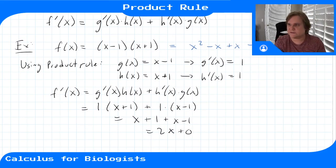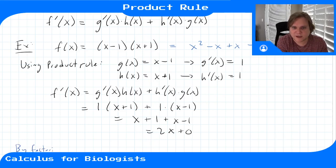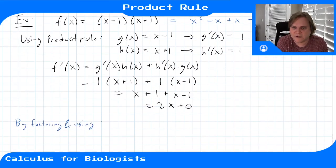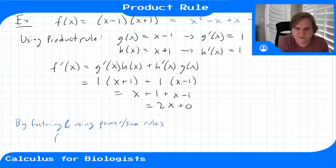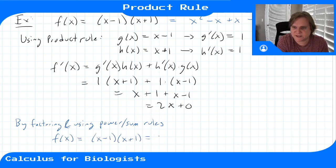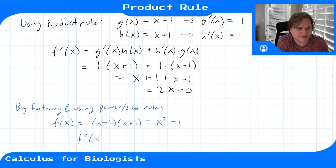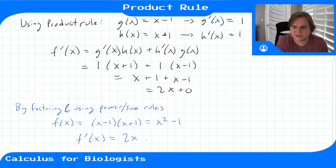If we did that by factoring and using the power and sum rules — factoring x minus 1 times x plus 1 gives us x squared minus 1 — I can check that this is the same thing. The power rule says this becomes 2x: the power goes down by 1, so it's 2x plus 0. They are indeed the same.